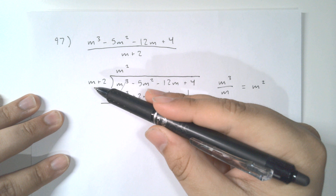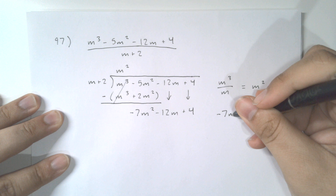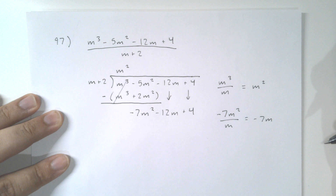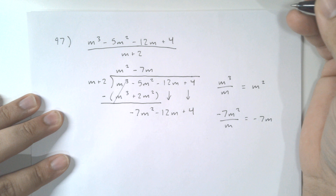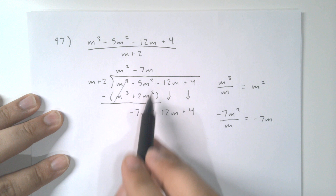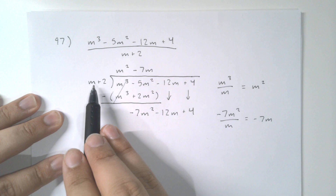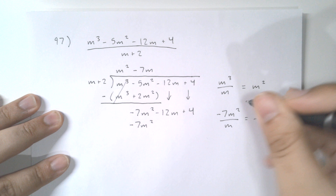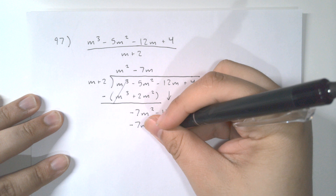We repeat the process and ask how many times m goes into -7m². Doing -7m² ÷ m gives us -7m, so we write -7m up top. Then we multiply m + 2 times -7m: m times -7m is -7m², and 2 times -7m is -14m.